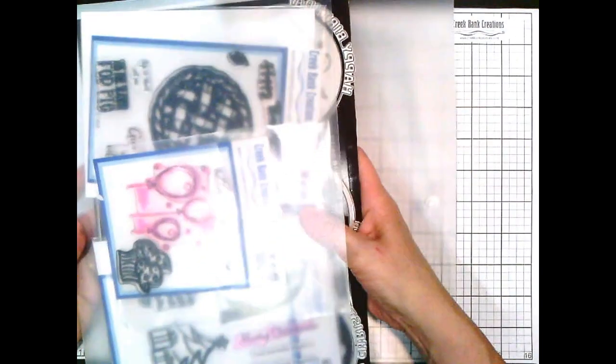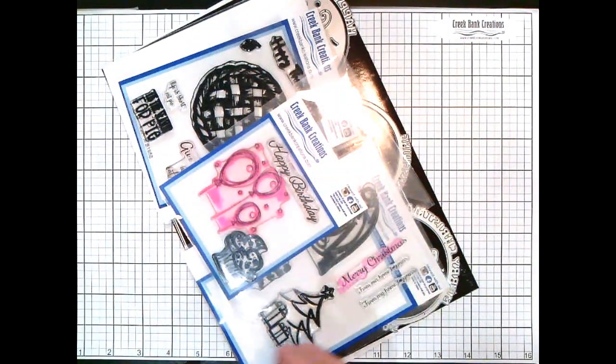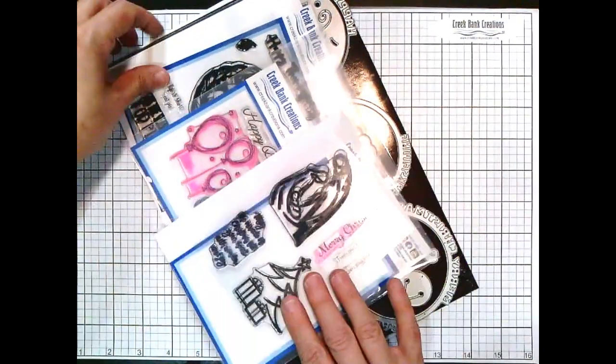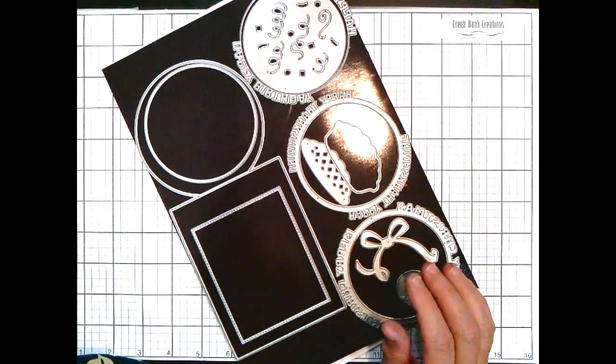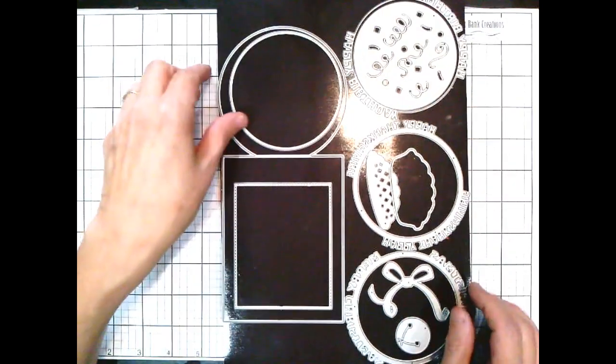You can also buy the magnetic board to go with it. So when I store mine, this is how I store my set. I store it all together, and then when I need it I can get into it. So I've got my stamp sets in there and I've got my die sets in there.